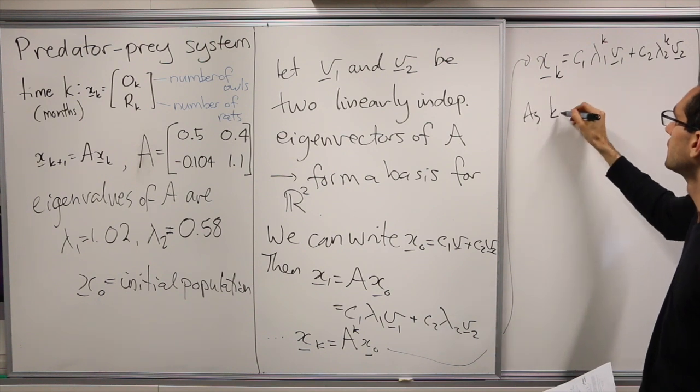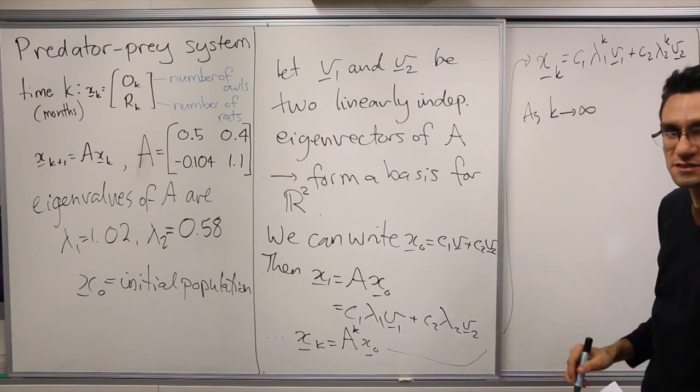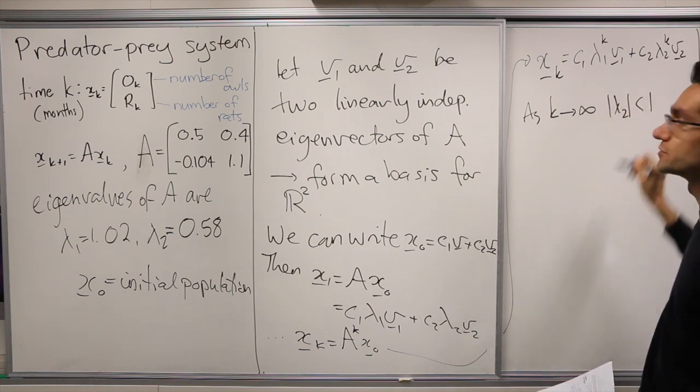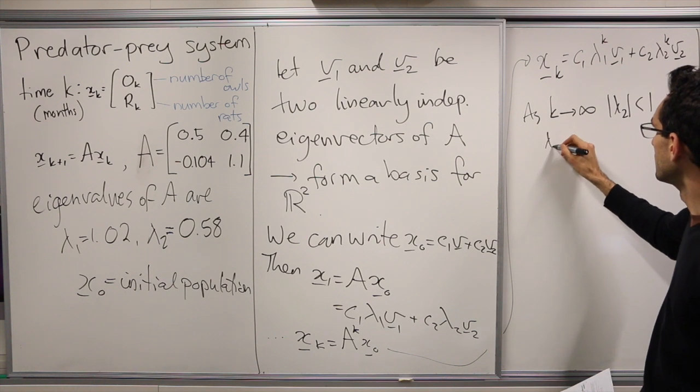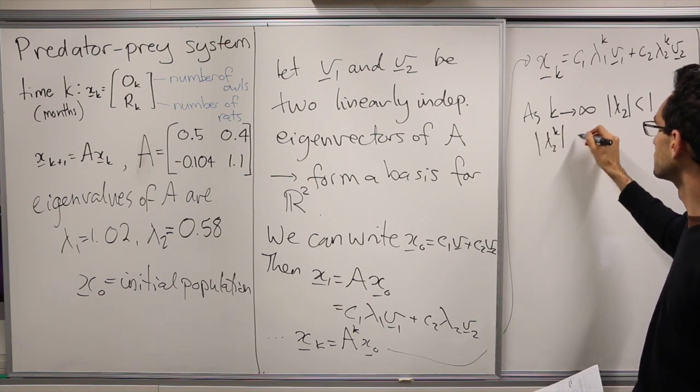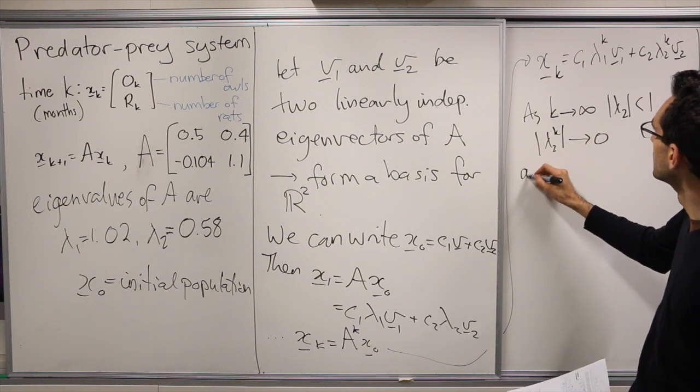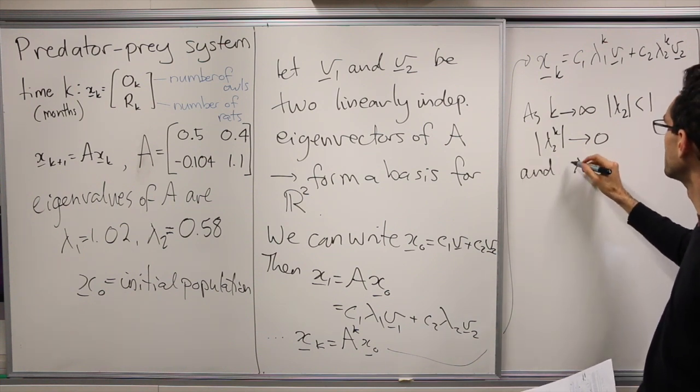So as k gets larger, heads up to infinity, then lambda 2 in magnitude being less than 1, lambda2^k in magnitude goes towards 0.